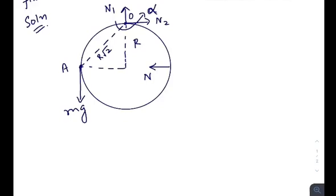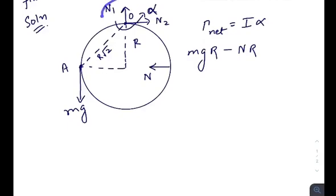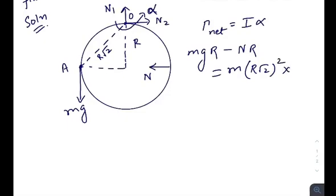We know that net torque equals I times α, where α is the angular acceleration just after releasing bead B. The anticlockwise torque is created by mg, equal to mg times r. The clockwise torque is created by the normal N times r. The moment of inertia of the whole system is only due to bead A: m times (r√2)² times α.